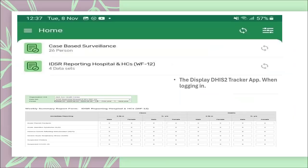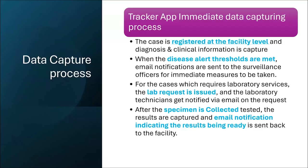Around 52 health facilities started in 17 districts for the pilot phase. Later the wider rollout reached almost 81 percent of entire districts. When a case comes at the facility level through indicator-based surveillance, the case is identified and registered in the system. If it is a true alert, a lab request is made, the lab team receives the notification, and results — either negative or positive — feed back to the facility level. Access to the app requires a DHIS2 instance username and password. Two forms were developed: one for case-based surveillance and one for weekly aggregate reporting at the facility level.